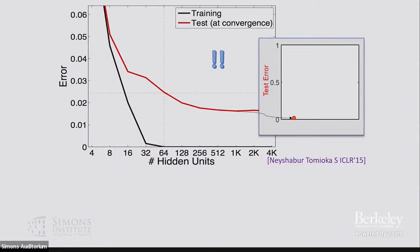At this point there are more parameters than data points, so the model is underdetermined. We found the empirical risk minimizer — we minimized the training error and found a global minimum of zero. How do I know it's a global minimum? Because the objective is non-negative and I found zero error — so it's definitely a global minimum. But the thing is there are many global minima, many ways of getting zero error. Each one of these points on the plot corresponds to a zero training error solution — all of these are valid global minima — and somehow the one we found actually generalizes well.